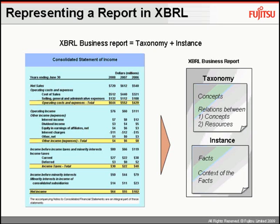The taxonomy is simply a way to describe and classify the reporting concepts within a financial statement. A concept is simply a piece of information in the statement, like sales or selling, general and administrative expenses. The taxonomy is simply a collection of all these concepts and how they're related.